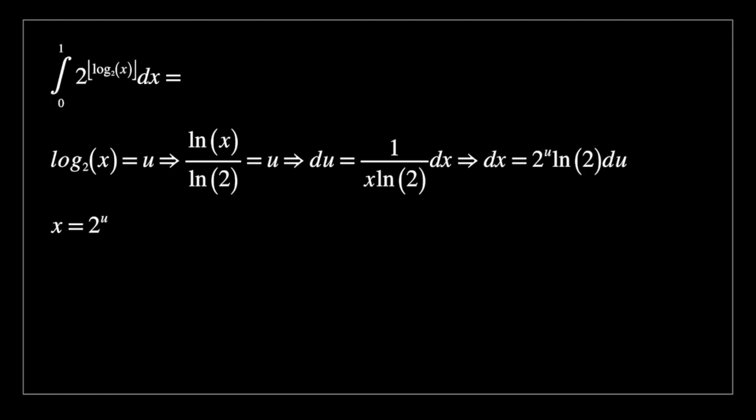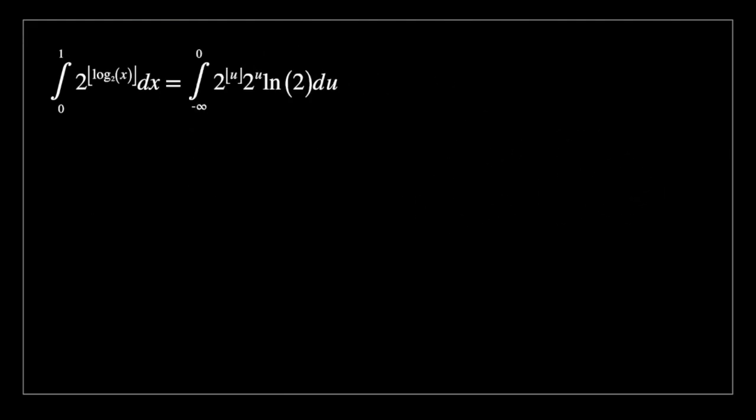So what are we going to get for the bounds? Now this is kind of difficult because of course log of 0 is not defined, so we have to take a limit and that's going to give us minus infinity. And then log of 1 is equal to 0, and we have 2 to the power of this floor function of our u times 2 to the power of u, not in a floor function, times log of 2 du. So first of all, we can take out the constant, and second of all, basically we've now got a really clean way of writing our floor function. Every part of the floor function is just u.